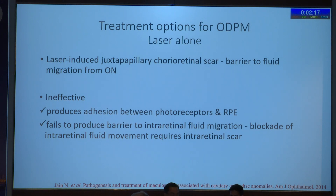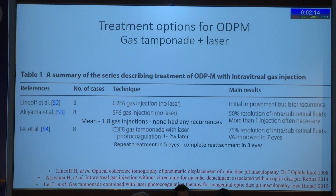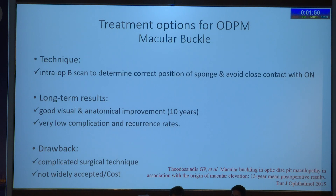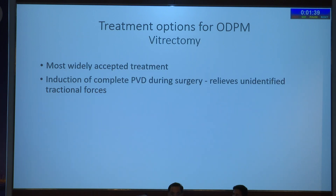Other options include injecting gas with or without laser, but the results are not great. Macular buckle is also possible but is a very demanding procedure requiring a very well-trained retinal surgeon, and it's quite expensive with a complicated surgical technique. It is not widely accepted as a treatment option. The most widely accepted treatment options involve inducing PVD to release forces, along with vitrectomy.